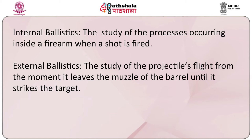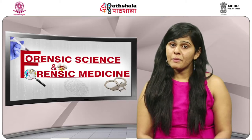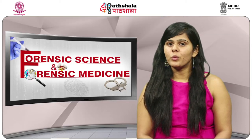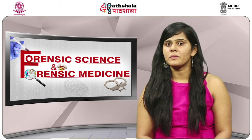When a firing pin strikes the primer, the priming compound explodes, causing an extremely high temperature jet of flame — about 2000 degrees Celsius — to pass through the flash hole and into the propellant charge. This jet of flame ignites the propellant powder, which burns at high speed to form a large volume of gas. This high pressure gas accelerates the bullet down the barrel and out the muzzle.